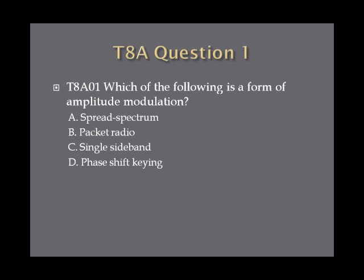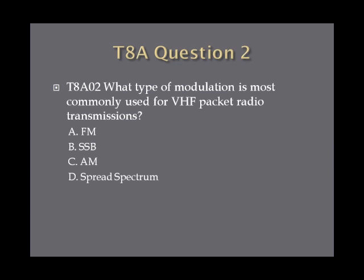Question 1: Which of the following is a form of amplitude modulation? A. Spread spectrum. B. Packet radio. C. Single sideband. Or D. Phase shift keying. Question 2: What type of modulation is most commonly used for VHF packet radio transmissions? A. FM. B. SSB. C. AM. Or D. Spread spectrum.